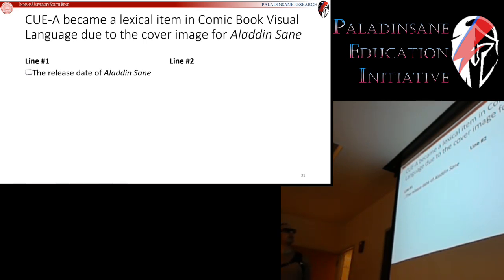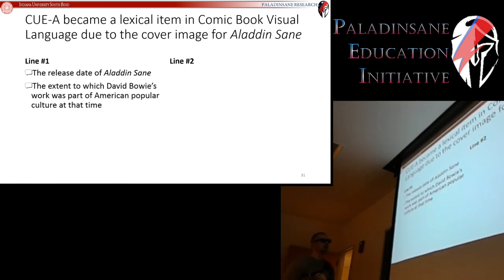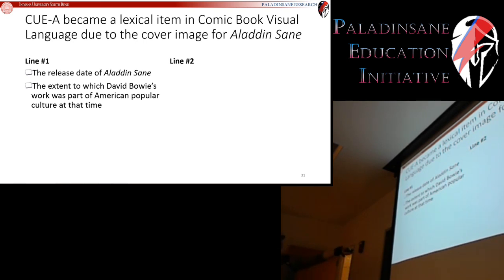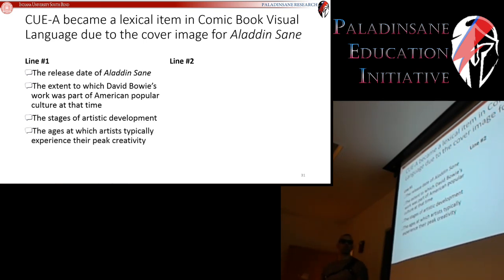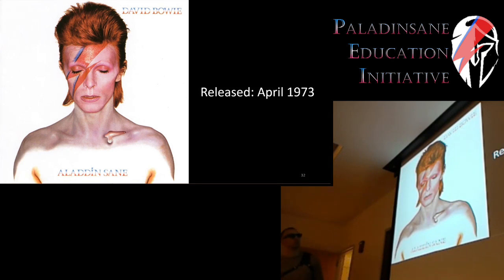We're going to take a look at the release date of Aladdin Sane, then look at the extent to which David Bowie's work was part of American culture — because if nobody knew who he was and nobody experienced this image, he wouldn't be able to make it part of language. Then we'll look at the stages of artistic development and the ages at which artists typically experience their peak creativity. All this together gives us our first line of evidence pointing to Aladdin Sane introducing CEA to comic book visual language.